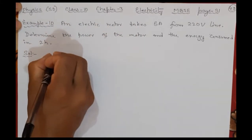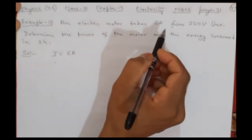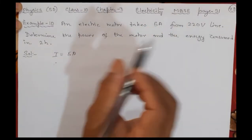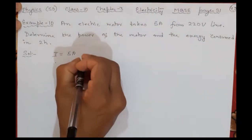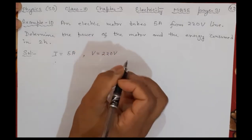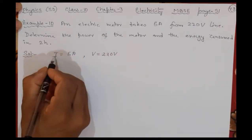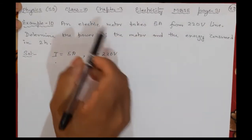...ampere, that means the current I = 5A. An electric motor takes 5 ampere from 220 volt line, so the voltage V = 220V. Till now you have been familiar how we are writing and picking up these values.